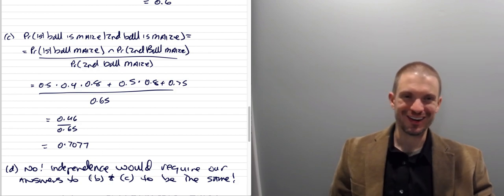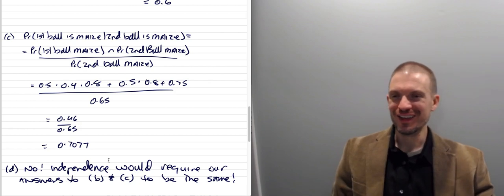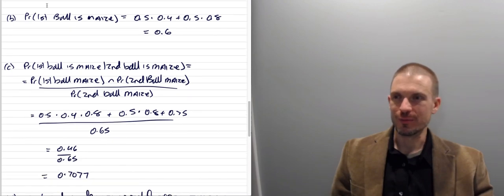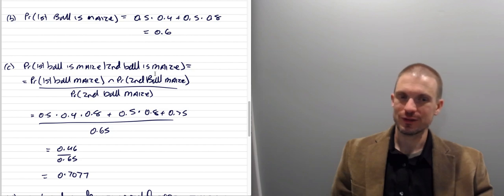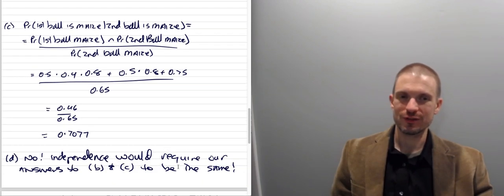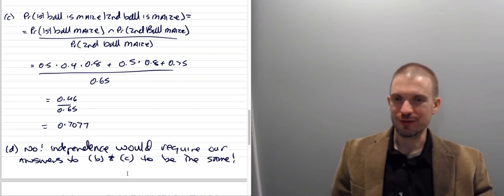Are these independent events? No. Independence would require P(first ball is maize) to equal P(first ball is maize | second ball is maize). But we got 0.6 and 0.7077 respectively — those are not equal. So these are not independent events.